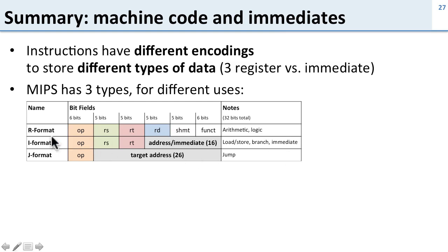In MIPS we have three different types. R-format gives us three registers and no immediate. I-format gives us two registers and a 16-bit immediate. And J-format gives us no registers but a full 26-bit immediate.